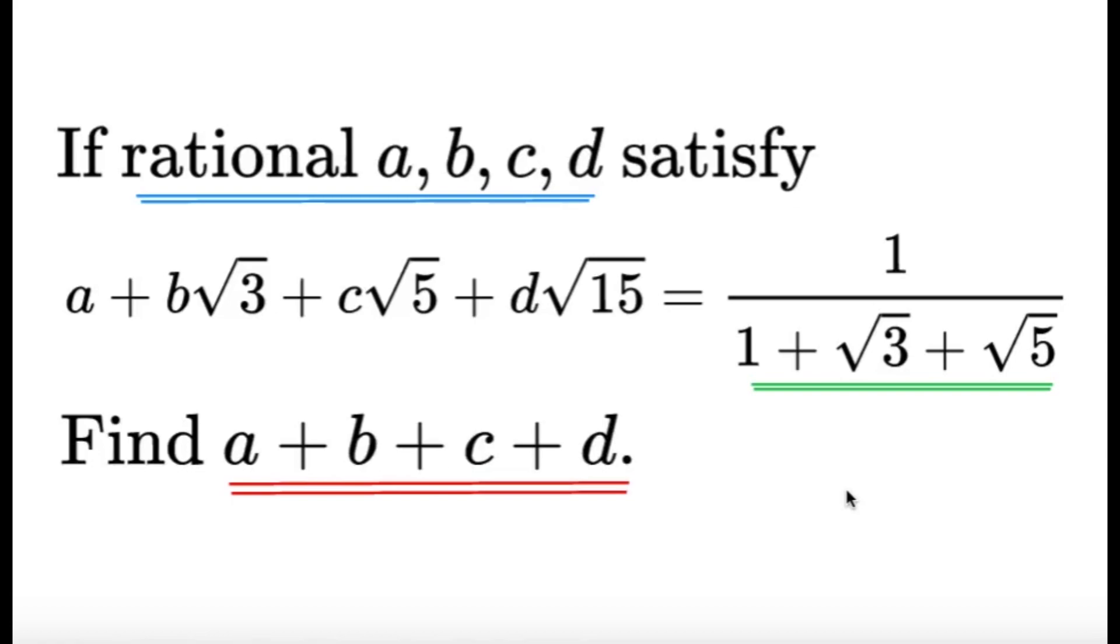Welcome to a collaboration project between Tumplit and City's Mathverse on Hong Kong International Math Olympiad questions. For this one, if rational a, b, c, d satisfy a plus b square root of 3 plus c square root of 5 plus d square root of 15 equals 1 all over 1 plus square root 3 plus square root 5, find the value of a plus b plus c plus d.